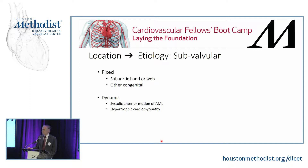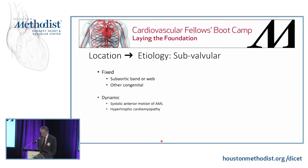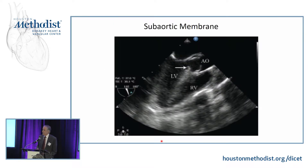Subvalvular stenosis is also possible, and these can be fixed — as in a subaortic web — or dynamic, as in hypertrophic obstructive cardiomyopathy or systolic anterior motion of the mitral anterior leaflet. Here we have an image of a subaortic web, and you can see the membrane is clearly below the level of the annulus. With color Doppler, you would see turbulence in the area between this web and the annulus.